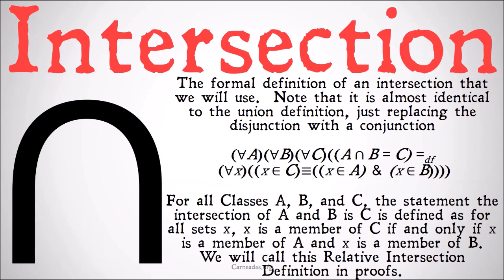The formal definition of an intersection that we'll use is as follows. Note that this is almost identical to the union definition, just replacing the disjunction with a conjunction. For all classes A, B, and C, the statement A ∩ B = C is defined as: for all sets X, X ∈ C if and only if X ∈ A and X ∈ B. We'll call this the relative intersection definition in proofs.